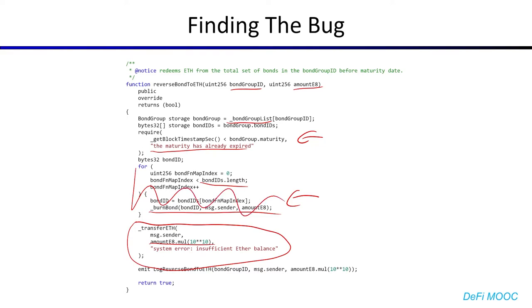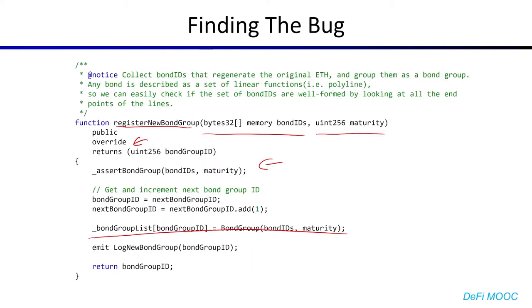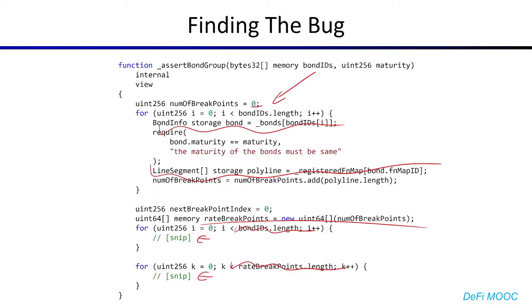Which means you can basically withdraw all of the ETH you want because there's no validation being performed. Obviously, this is kind of bad — it puts every single unit of ETH in the contract at risk.